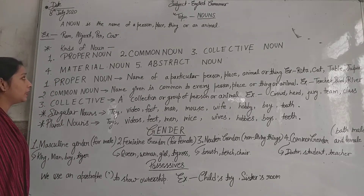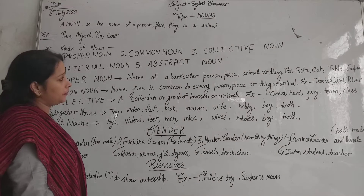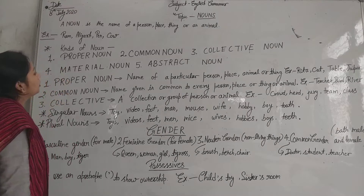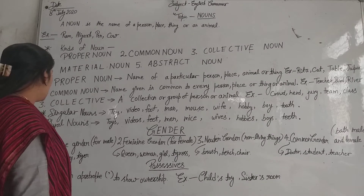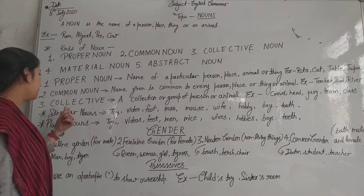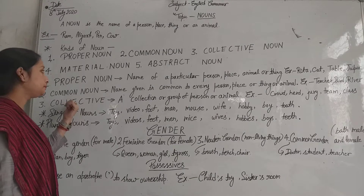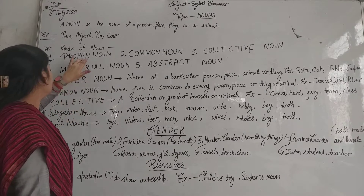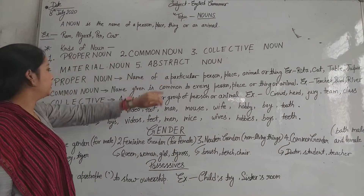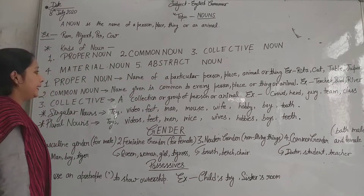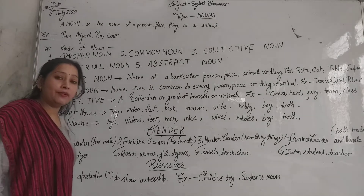We will now look at the kinds of nouns. In the actual classification, there are 5 kinds of nouns. The first is proper nouns, then common nouns, collective nouns, material nouns, and abstract nouns. These are the 5 kinds of nouns.